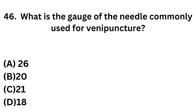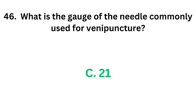Question number 46: What is the gauge of needle commonly used for venipuncture? Option A: 26. Option B: 20. Option C: 21. Option D: 18. We know that gauge size of the needle is inversely proportional to the diameter — more the gauge size, lesser will be the diameter. The correct answer is option C, 21. Gauge of the needle commonly used for venipuncture is 21 gauge.